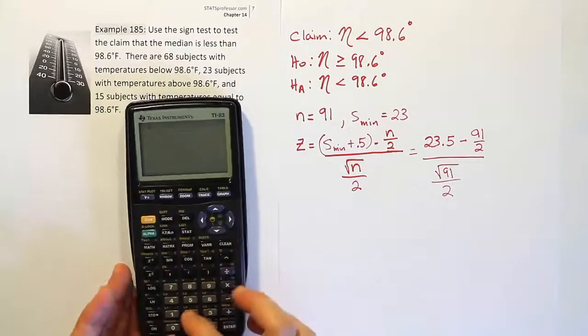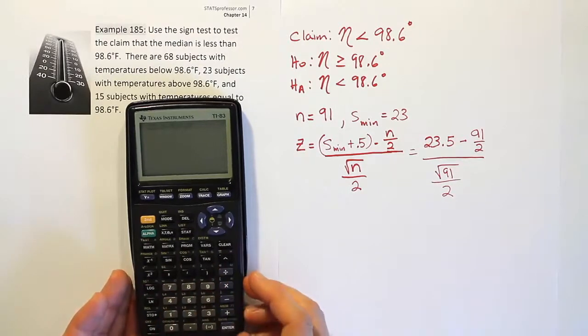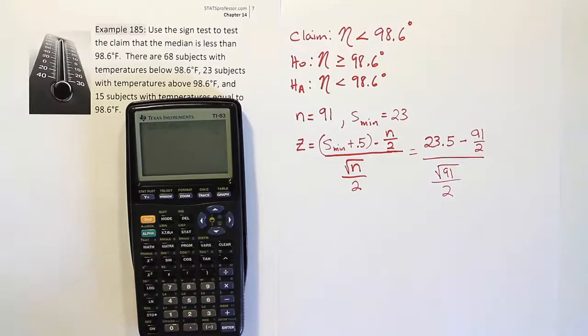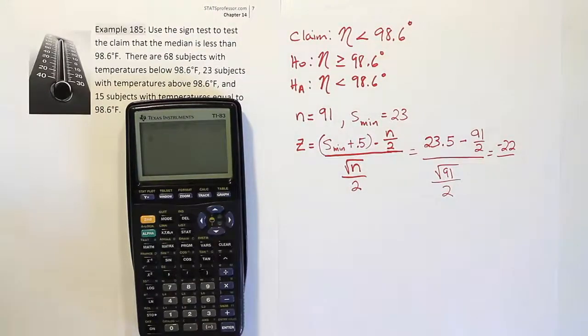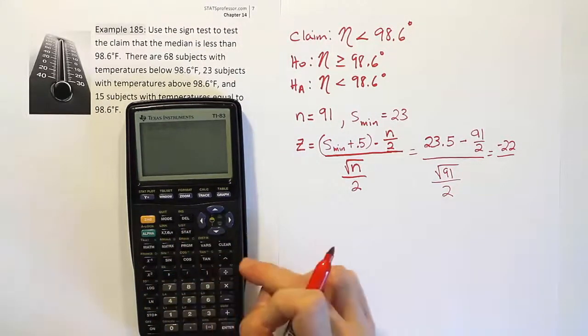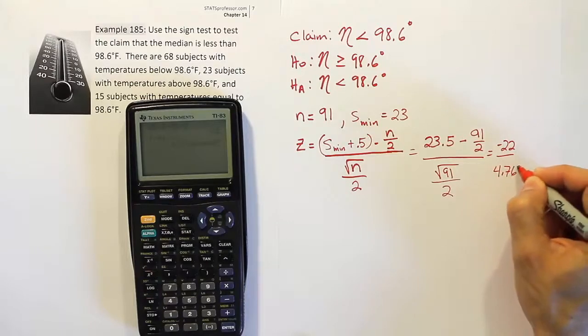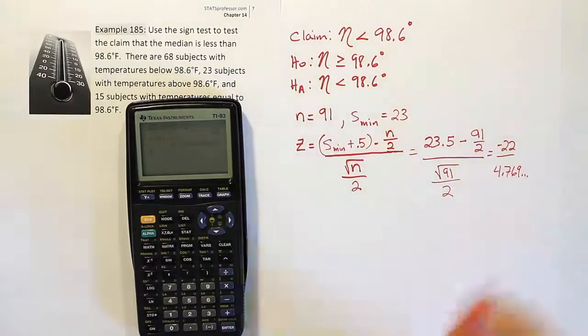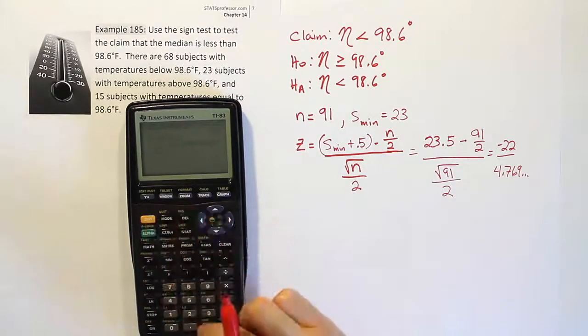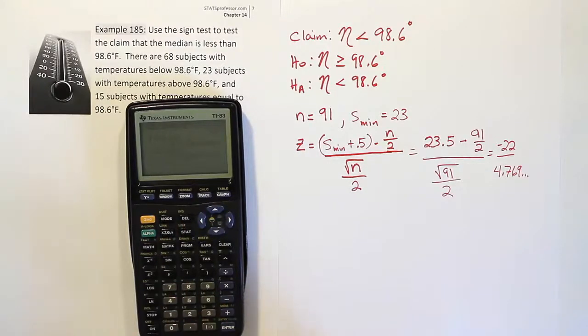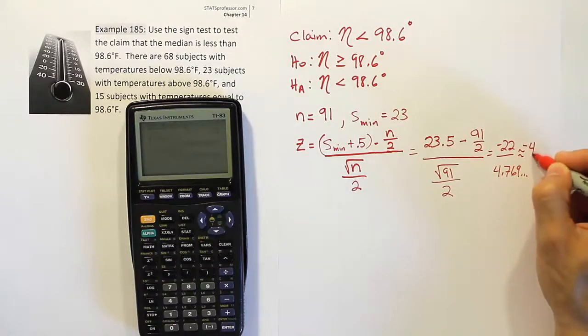Let's do that quickly. We'll say 23.5 minus 91 divided by 2, and you get negative 22 on top. Then you'll be dividing by the square root of 91 divided by 2, and you'll get 4.769. If we divide those two, we'll come up with our overall answer. We're going to have minus 22 divided by that value. We're going to have negative 4.61. So this is approximately negative 4.61.